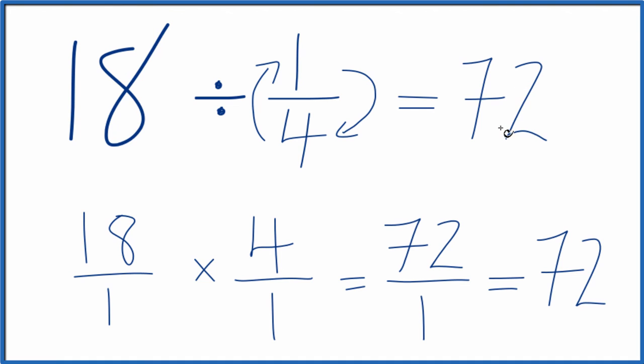If you were to multiply 72 times 1 fourth, you'd get 18. So we did this correctly.